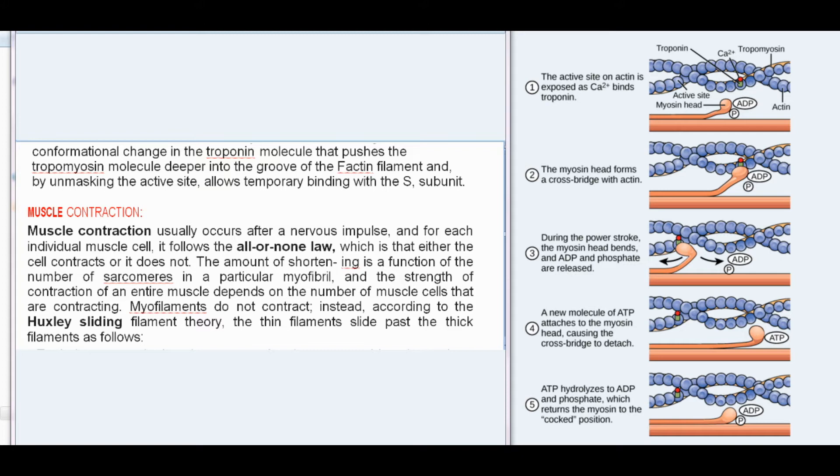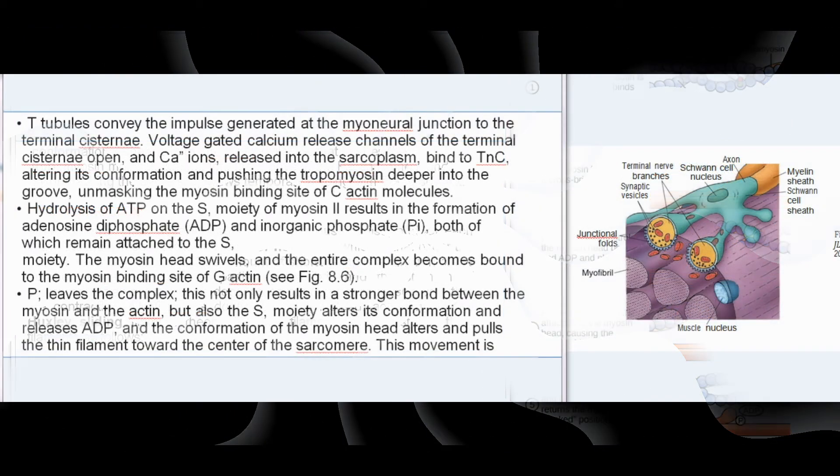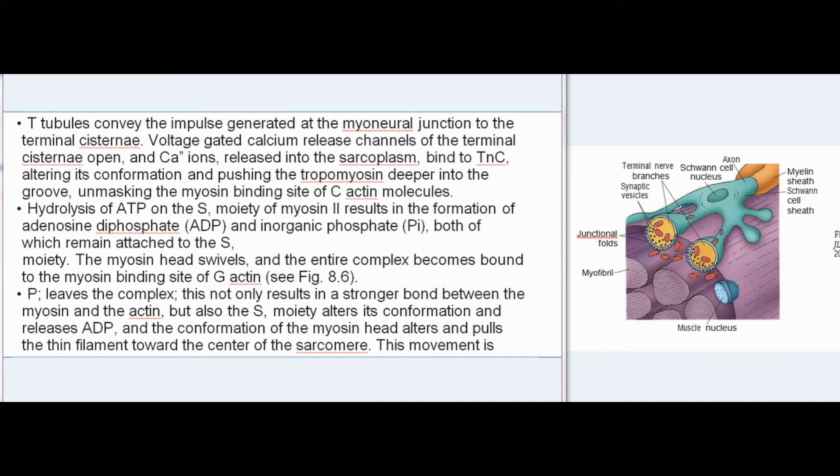Muscle contraction usually occurs after a nervous impulse, and for each individual muscle cell it follows the all-or-none law — either the cell contracts or it does not. The amount of shortening is a function of the number of sarcomeres in a particular myofibril, and the strength of contraction of an entire muscle depends on the number of muscle cells that are contracting. Myofilaments do not contract; instead, according to the Huxley sliding filament theory, the thin filaments slide past the thick filaments. T-tubules convey the impulse generated at the myoneural junction to the terminal cisternae, voltage-gated calcium release channels open, and Ca²⁺ ions released into the sarcoplasm bind to TnC, altering its conformation and pushing the tropomyosin deeper into the groove, unmasking the myosin-binding site of actin molecules.